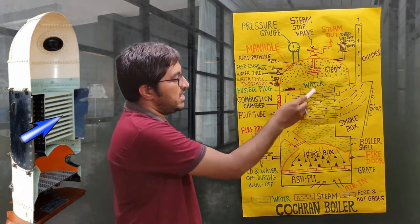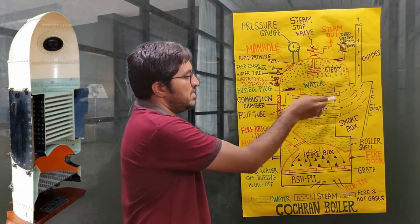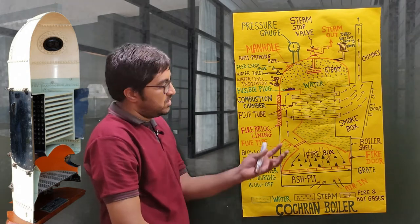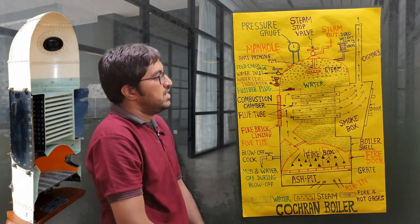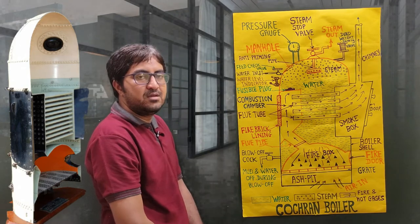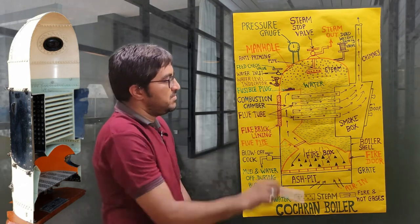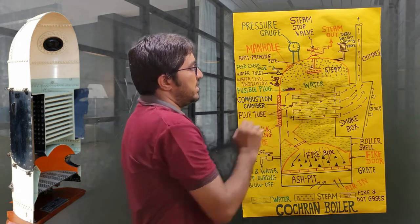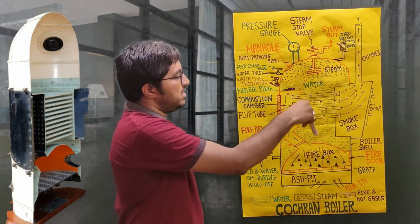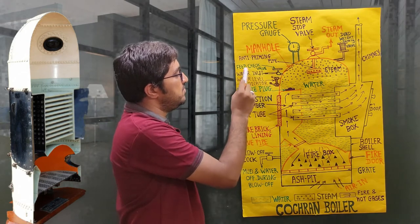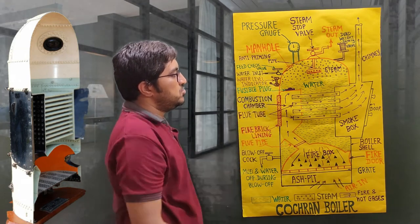Heat transfer takes place between the flue gases inside the tubes and the surrounding water. The water receives heat from the flue gases, starts to boil, and generates steam. The density of steam is approximately 1, so it remains at the top, while the density of water is 1000, so it remains at the bottom. The steam generated is collected in the hemispherical dome. Whenever the water level decreases, water can be fed through the feed check valve and monitored using the water level indicator.